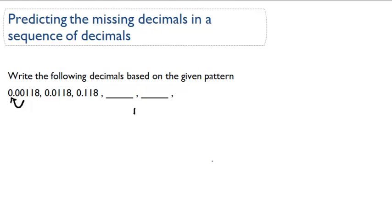So basically, we need to find what's missing in these two boxes. So let's see what's happening between the first two numbers. Where's the decimal point going?